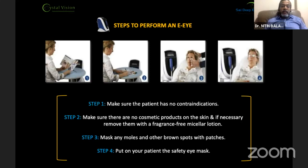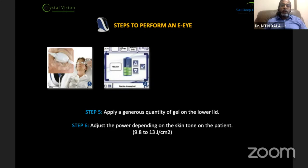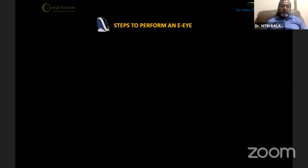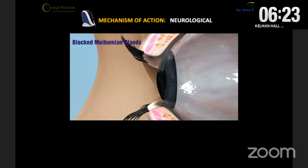The patient is fitted with safety goggles that cover the eyes. A generous quantity of gel is applied to the lower lid, following which power is adjusted depending on skin tone using the skin tone chart supplied with the unit — ranging from 9.8 to 13 joules per centimeter squared. The applicator must wear their own safety goggles. Five flashes are then applied starting from the inner canthus and ending in the temporal region, with a shot given in the zygomatic area, repeated on the other side, followed by removal of the gel.